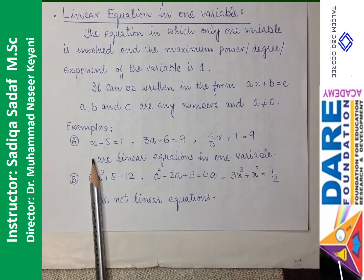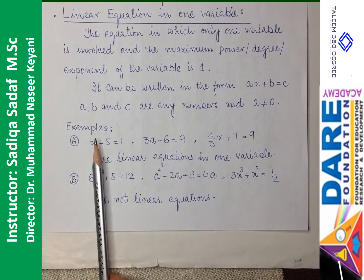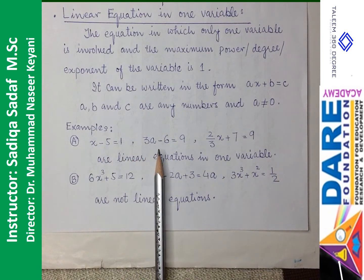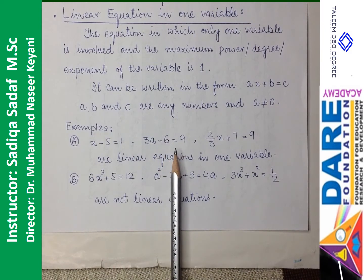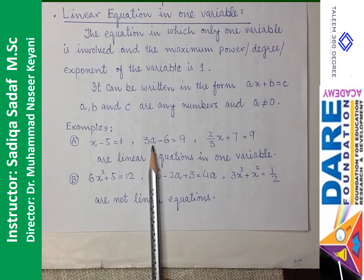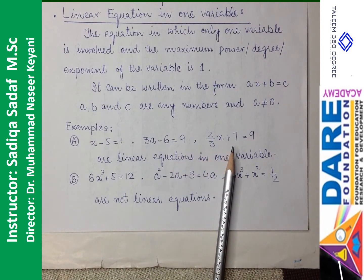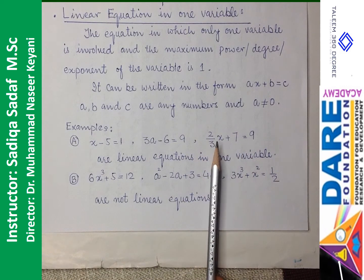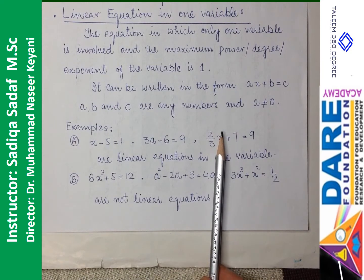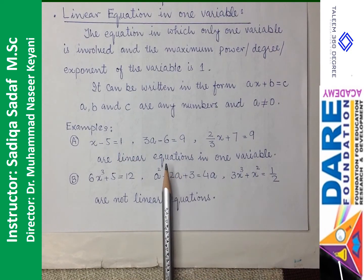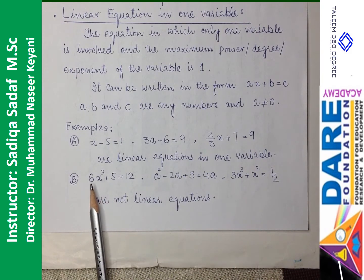Ek hi variable hai aur us variable ki power bhi 1 hai, to yeh linear equation in 1 variable ho gaya. 3A minus 6 is equal to 9 — ek variable A, power 1. 2/3 X plus 7 is equal to 9 — variable X, power 1. Yeh teenon examples hamare paas linear equation in 1 variable ke liye hain.